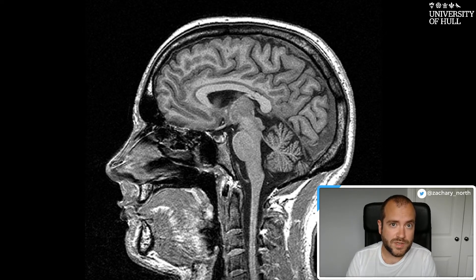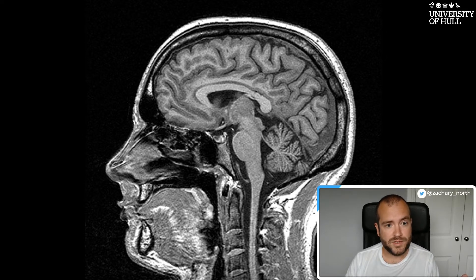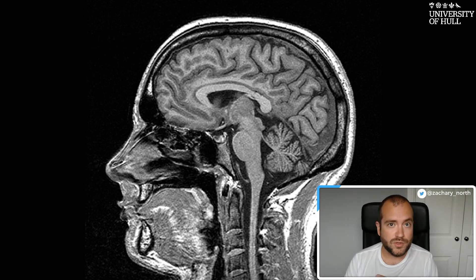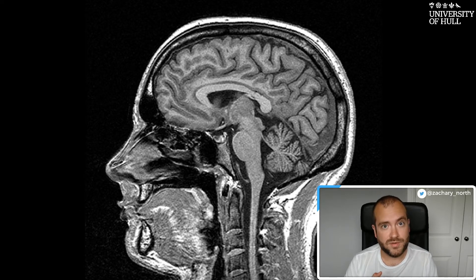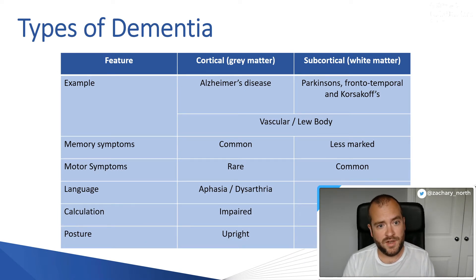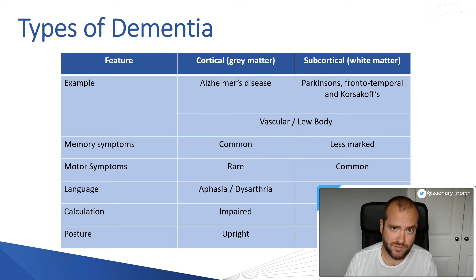The white matter areas are the inner tissues of the brain and are more responsible for motor functions. On this table, the left side shows cortical or grey matter — more associated with memory and perception of reality — while the right side shows subcortical white matter, normally associated with motor functions.